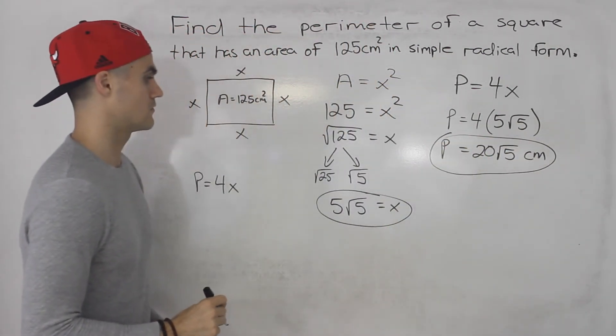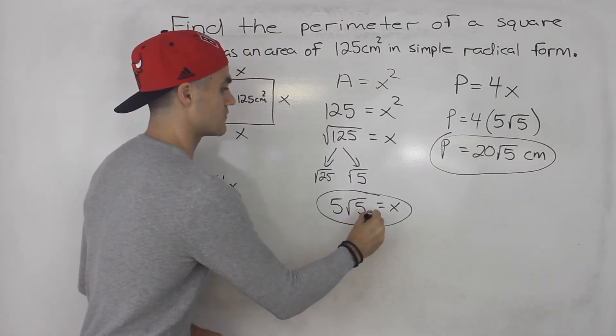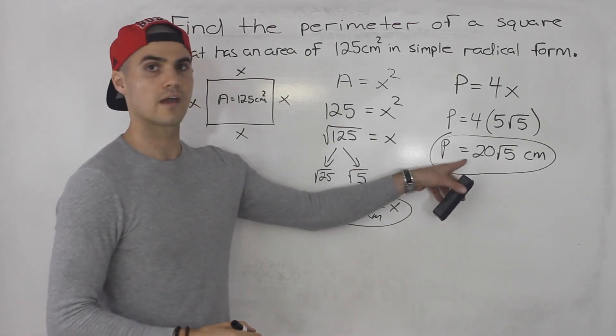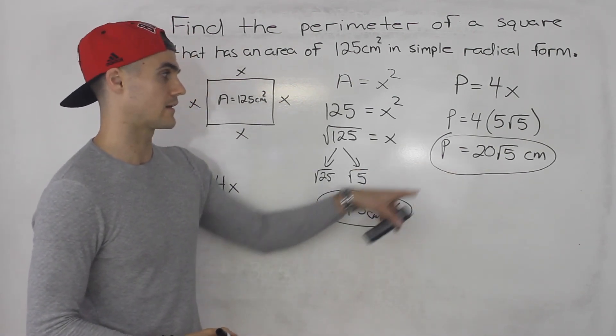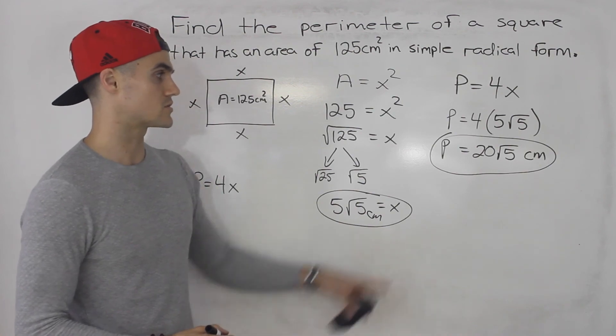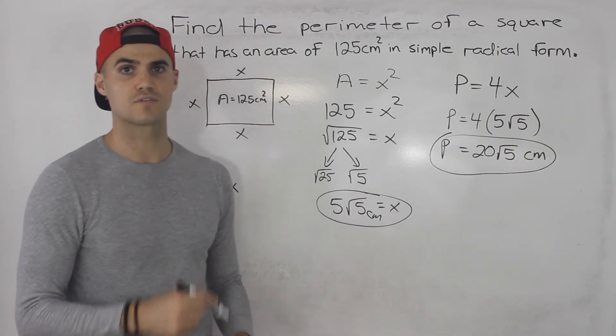That is the perimeter of this square, and 5 root 5 is the length of it. They weren't asking for the length. They asked for the perimeter, but we had to find the length in order to get the perimeter. So 20 root 5 centimeters, that's your final answer.